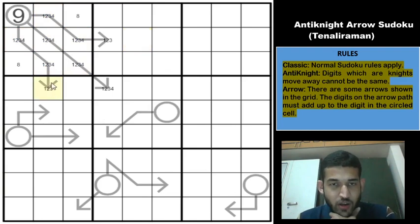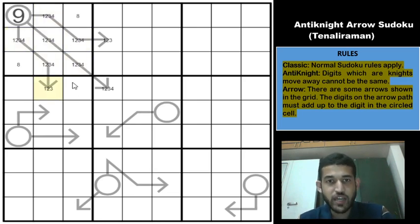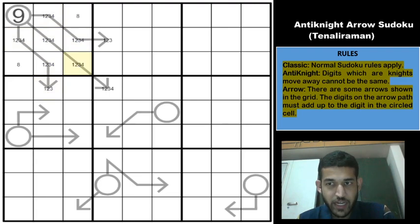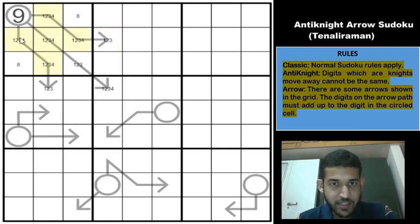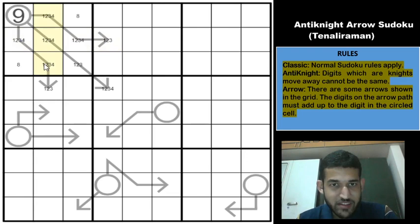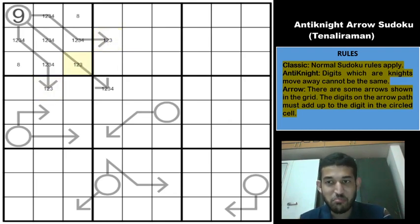Whatever value appears in the outer cells — 1, 2, or 3 — it must also be present inside those six cells since we know 1, 2, 3, and 4 are all there. Using the knight's restriction, that value can be eliminated from two knight's-move-away cells, meaning 4 can be eliminated from certain positions. Similarly, another outer cell is also 1, 2, or 3, and its value must appear in the six cells too. Therefore, these three outer cells must all be equal in value — a superb deduction!